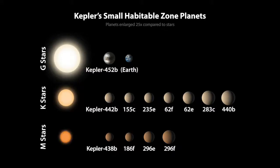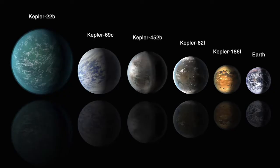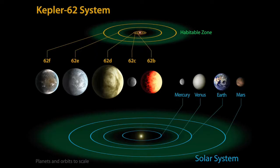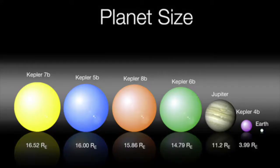Some exoplanets, like SWIFT J1756.9-2508b, orbit their star and complete a year in about 45 minutes. Other exoplanets, like 2MASS J2126-8140, take over a million Earth years to orbit their star and complete a year. Exoplanets have all sorts of extreme characteristics like these — some are just a fraction of our size, others are many times more massive than we are, with crazy densities, ages, albedos, distances to their stars, and so many other characteristics.